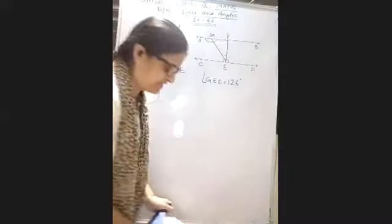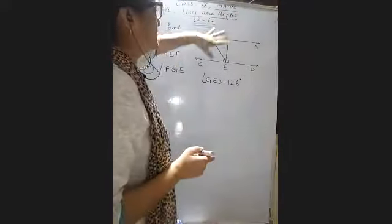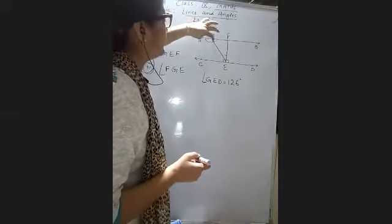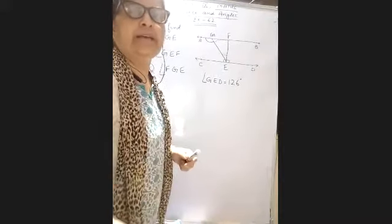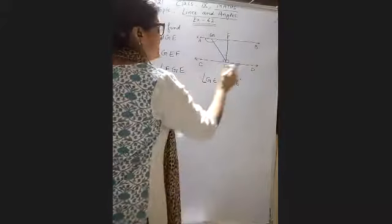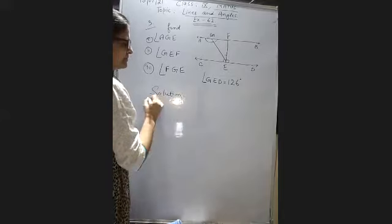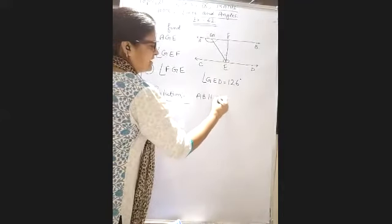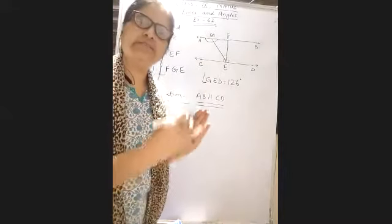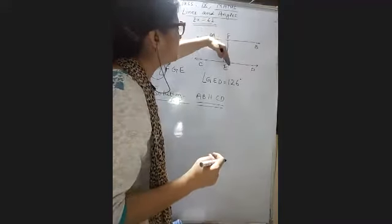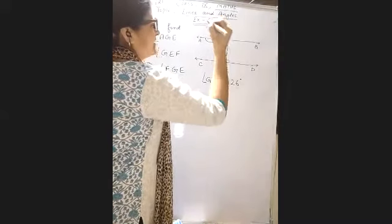Now how do we find these three angles in this figure? One by one I will tell you the explanation. First, AGE: because line AB is parallel to CD, and which transversal intersects it? GE transversal intersects it.